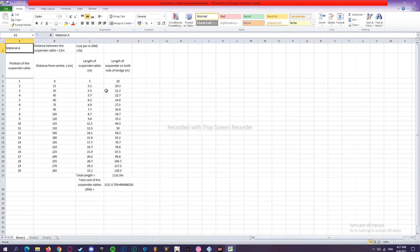After we find all the length of suspender cable on both sides of the bridge, we find the total length. Plus all the length of suspender on both sides of the bridge to find the total length. After finding the length, it is then multiplied by 750, the total cost per meter. The total cost for suspender cables for material A is RM 848,250.